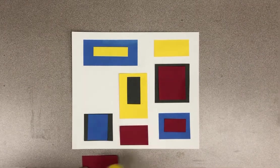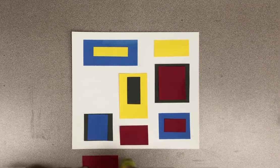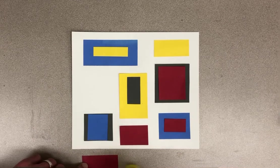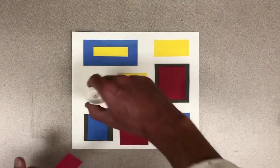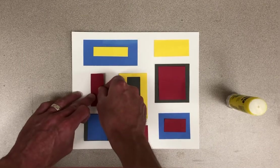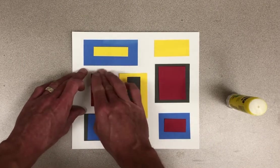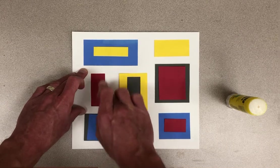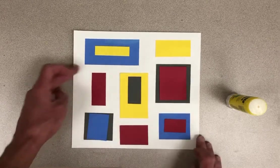If this spot starts to get kind of sticky, then move to a new spot on your table just so you don't get glue on the top sides of these. I would never put glue on the white paper. I'm always putting glue on the back of the rectangle, and it's nice that this is organized because then I can see exactly where I want all my pieces to go.